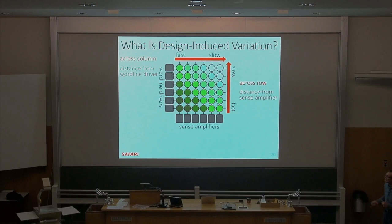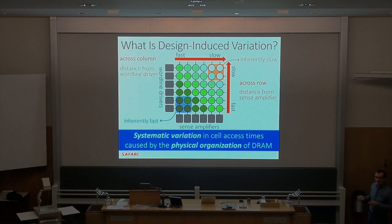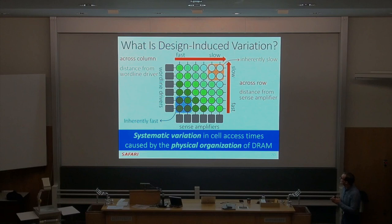There is a region of memory that's inherently fast because it's close to the sensing and driving structures, and a region that's inherently slow because it's far away. The key idea is maybe you can exploit this to reduce profiling time. If you know this slow region, you profile only that region to find the minimum latency — because this is the slowest region, if it operates correctly at some latency, the other regions will be fine too.